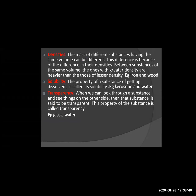Density: iron and wood both have mass, meaning weight. But the mass of different substances having the same volume can be different. Iron and wood may have the same weight but their volume can be different. The difference in density matters — greater density and lesser density. Density is one of the properties that can identify the difference between two substances. You can determine which has higher or lower density with the help of the substance's volume.